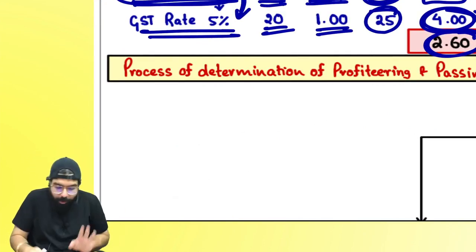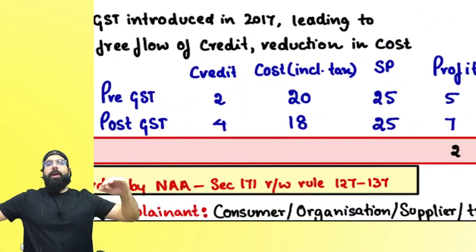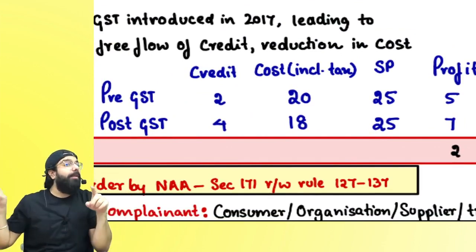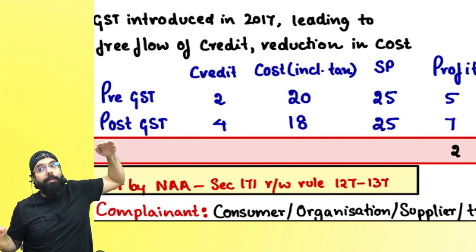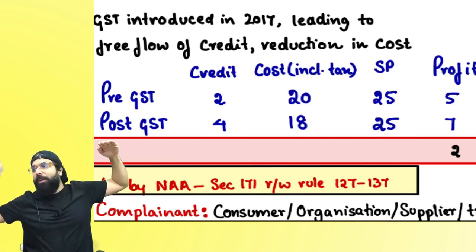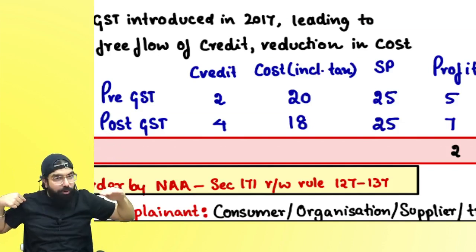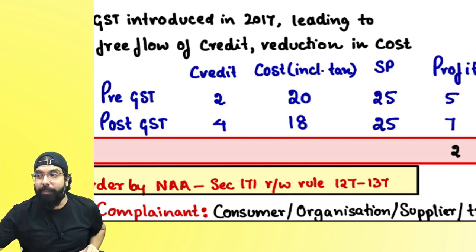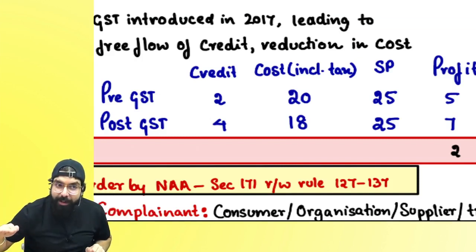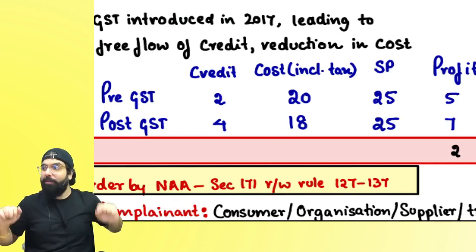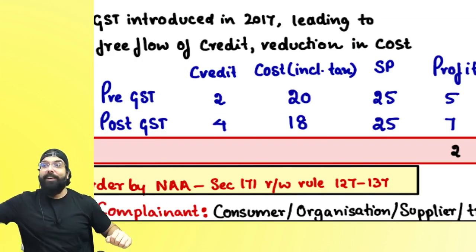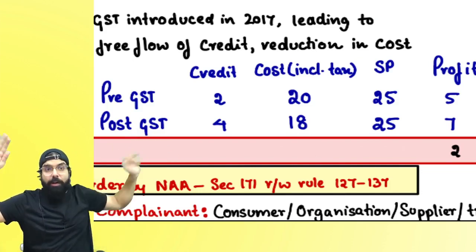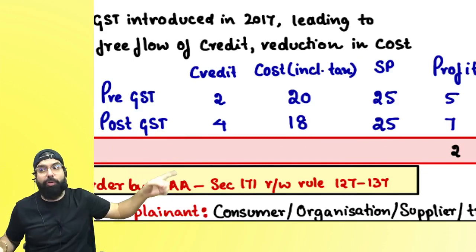One more thing — earlier, free flow of credit was not there, so you never used to get credit, and the cost of goods used to go up. Now, because of GST, free flow of credit is there, so cost of goods should come down. If cost is coming down because of GST, your selling price also should come down. If people are not reducing their selling price even as costs come down, that is profiteering too.